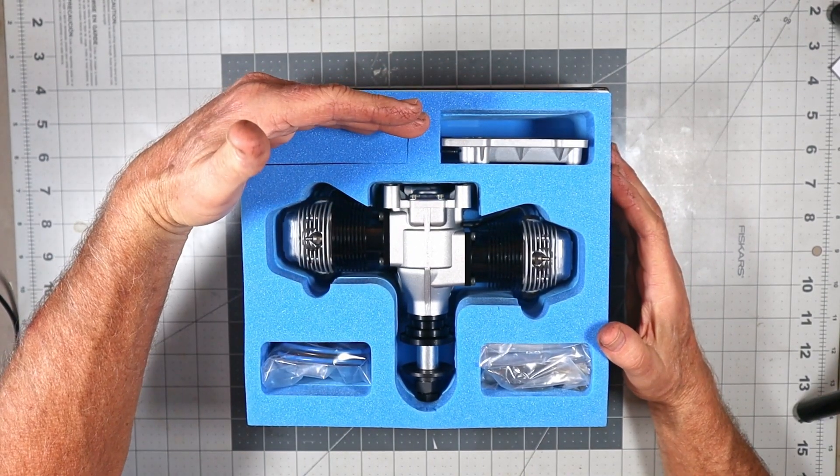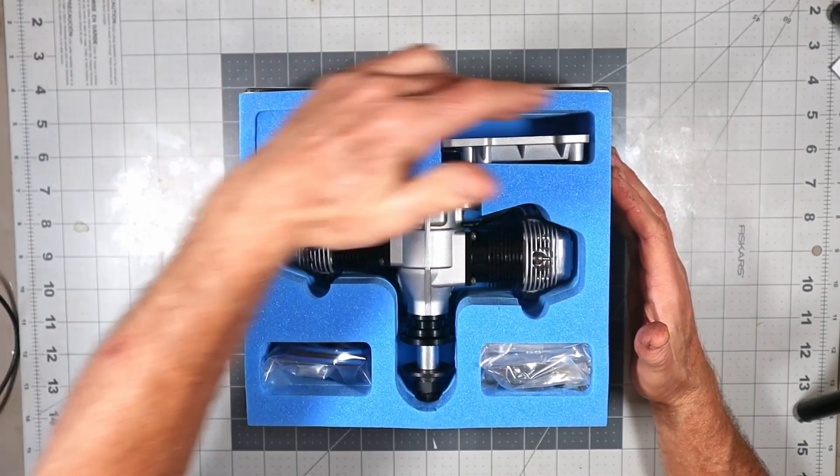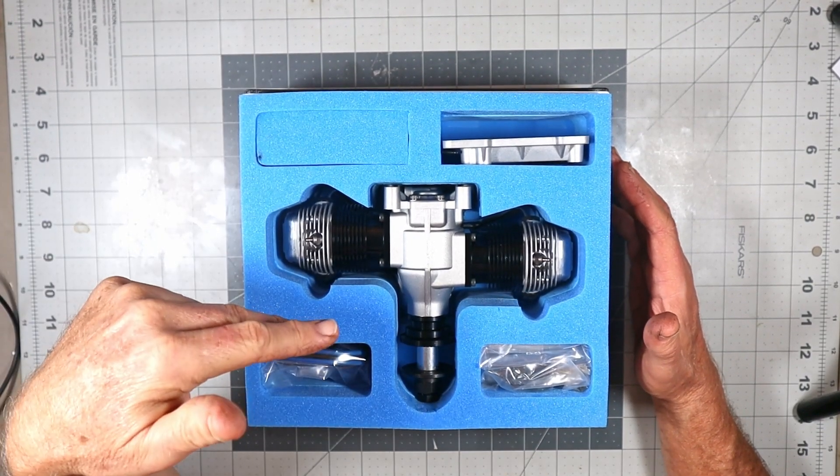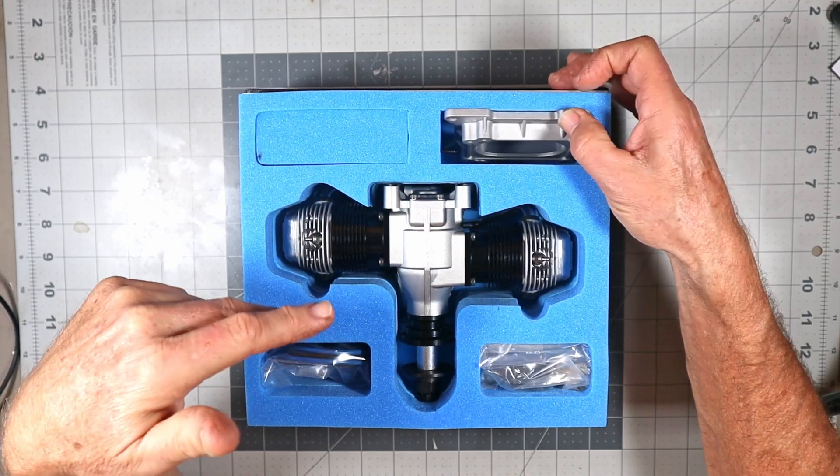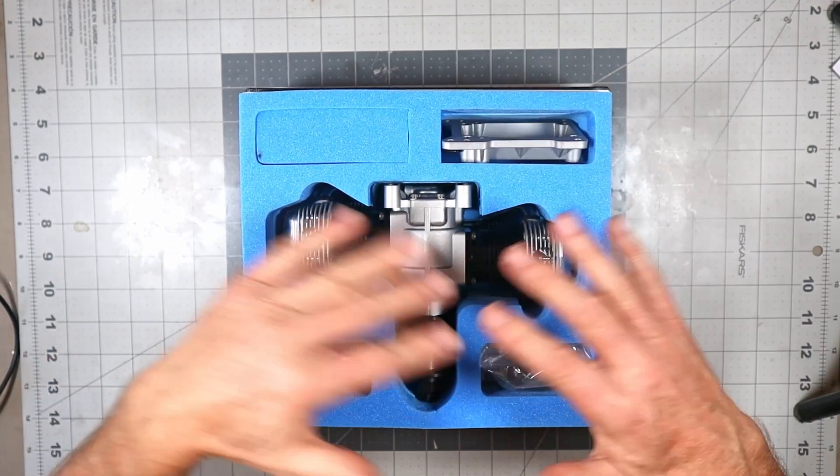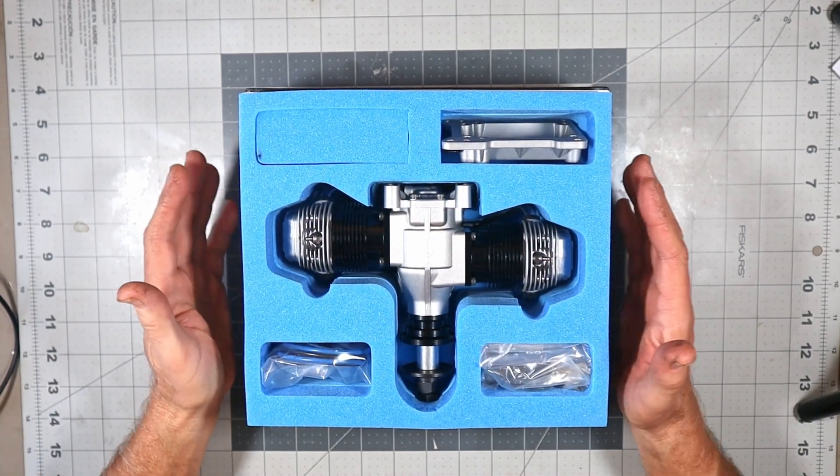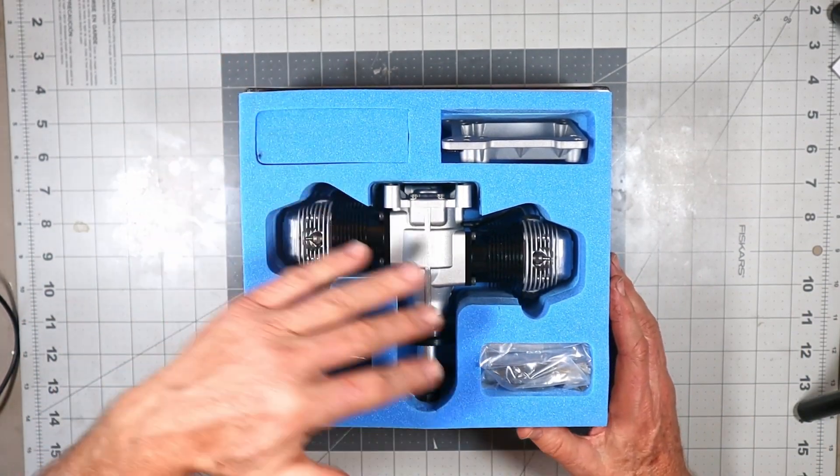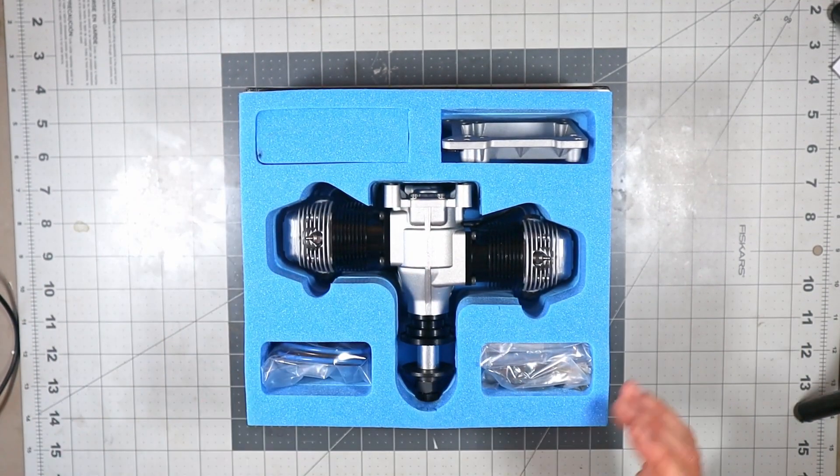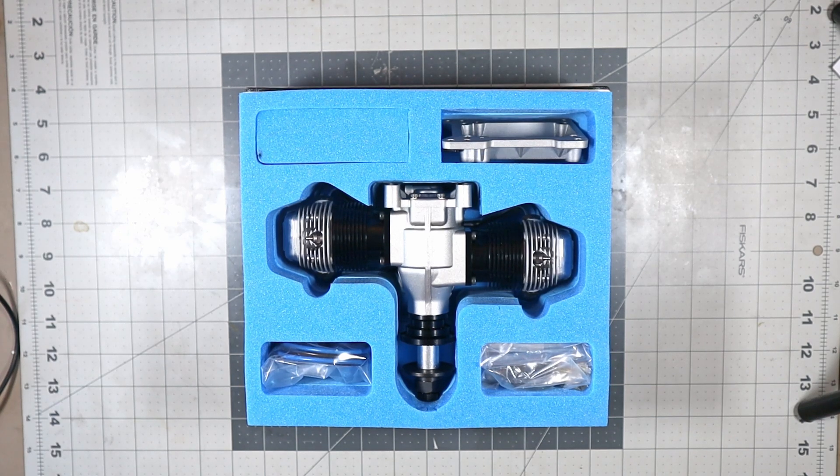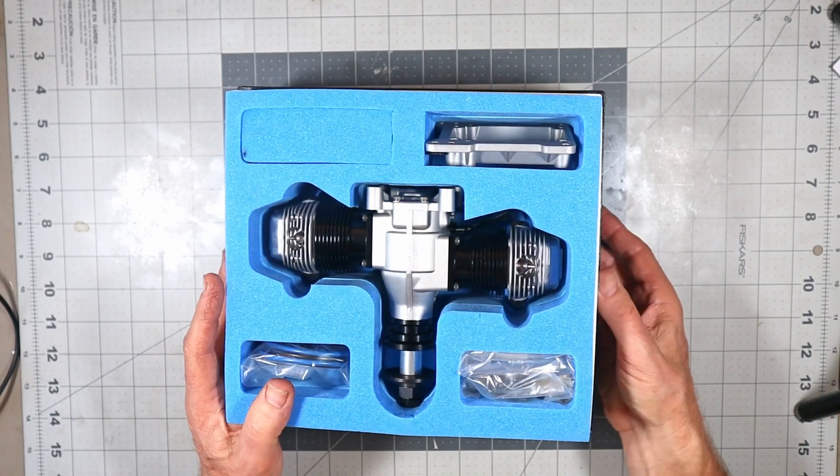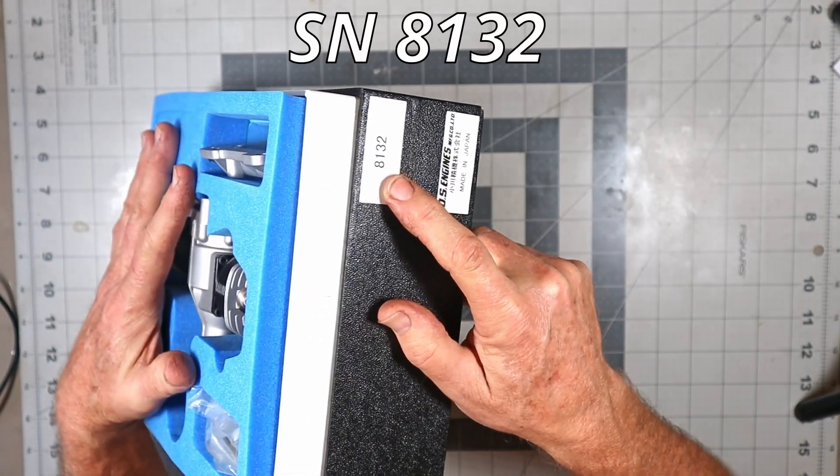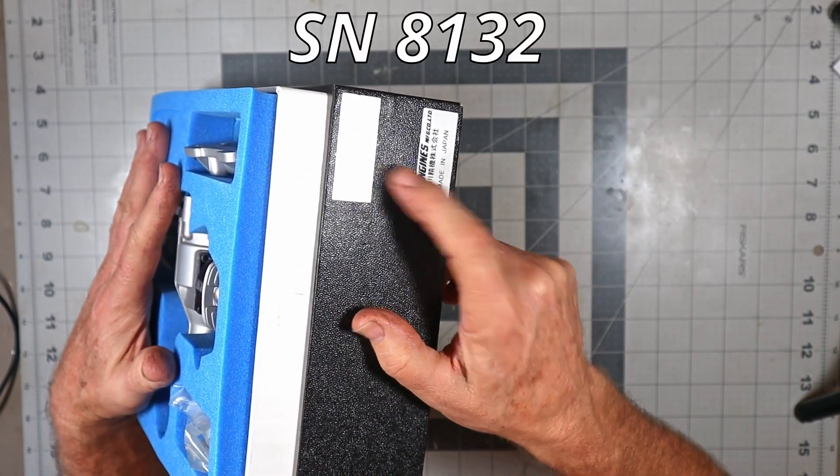There's nothing else in there. I'd seen some of these 160s on eBay that came with a long box-end wrench, but this one doesn't have it. Knowing past trends, when fewer things come with an engine that usually means it's a later one due to cost reduction. This tells me this engine could potentially be from the 90s or 2000s. It is serial number 8132.